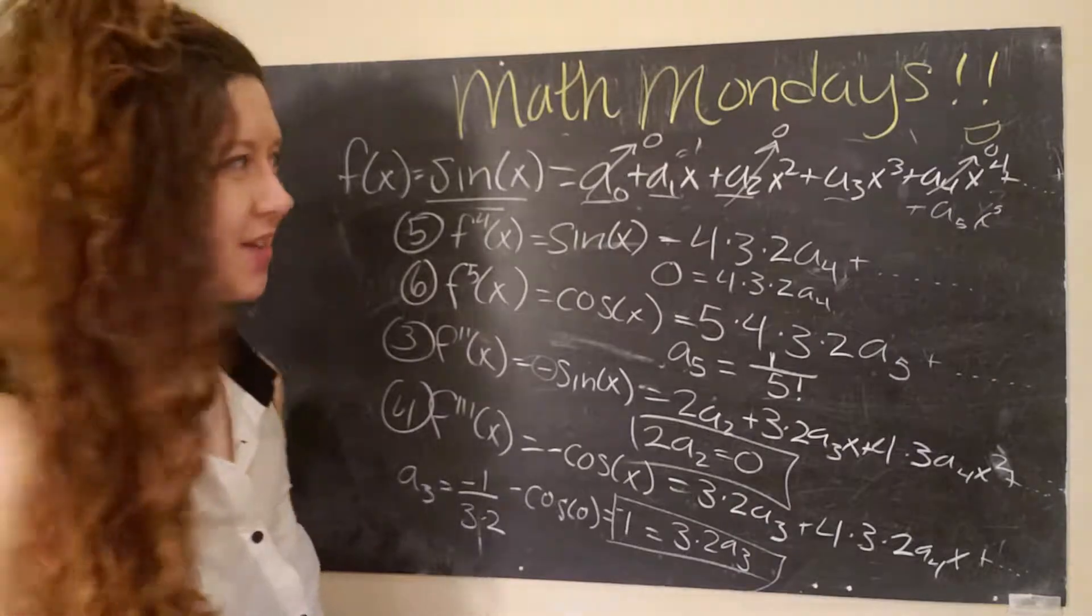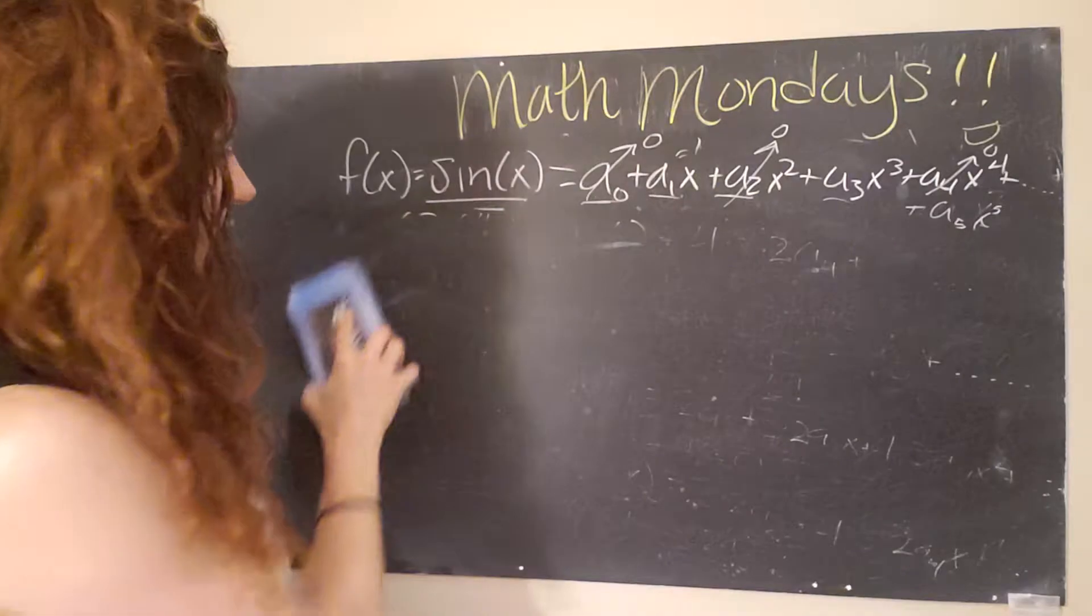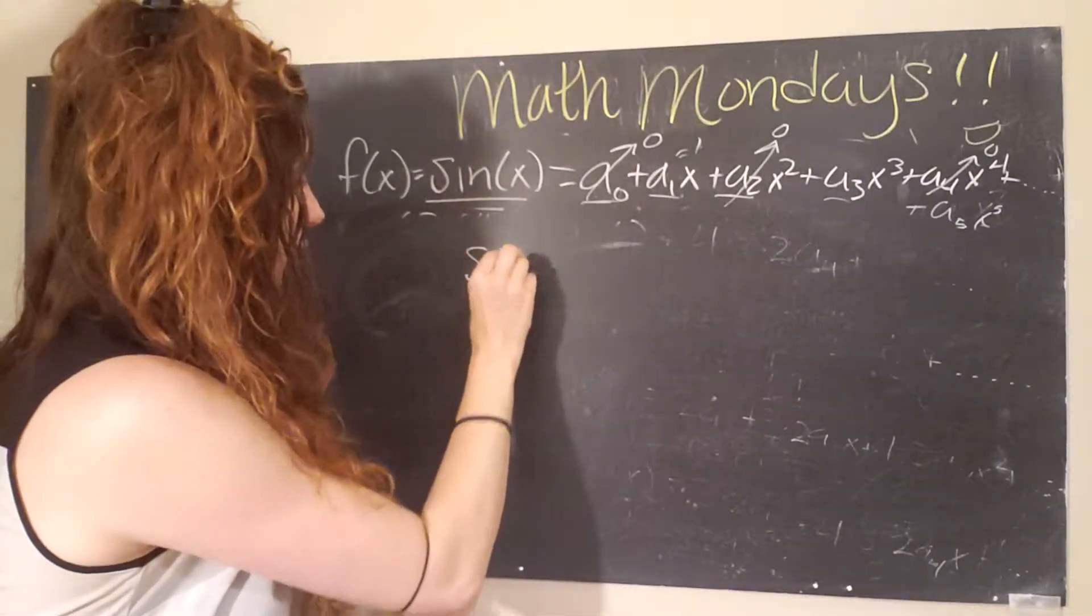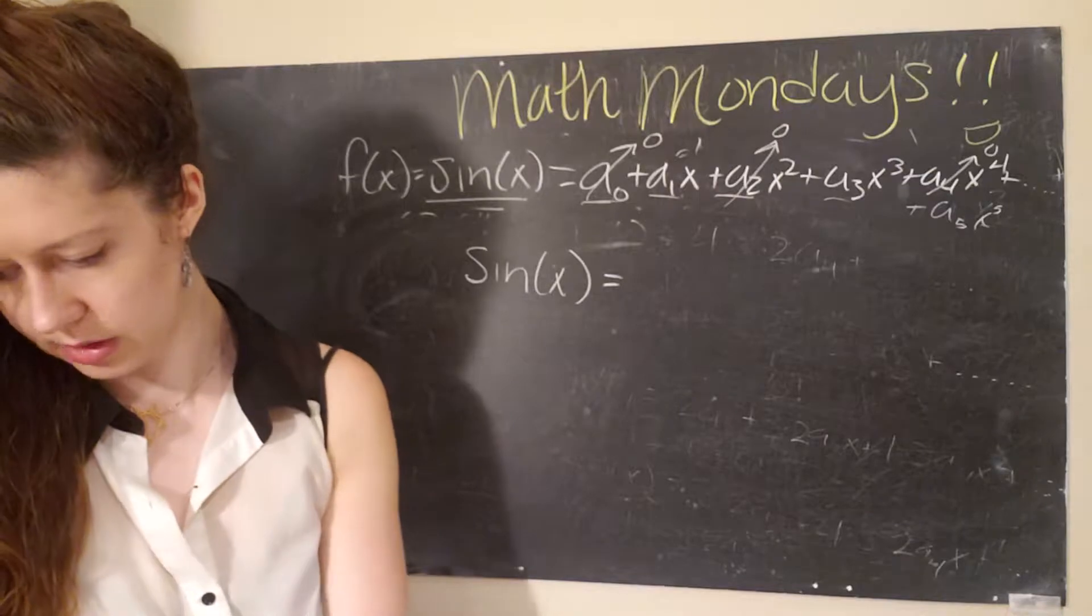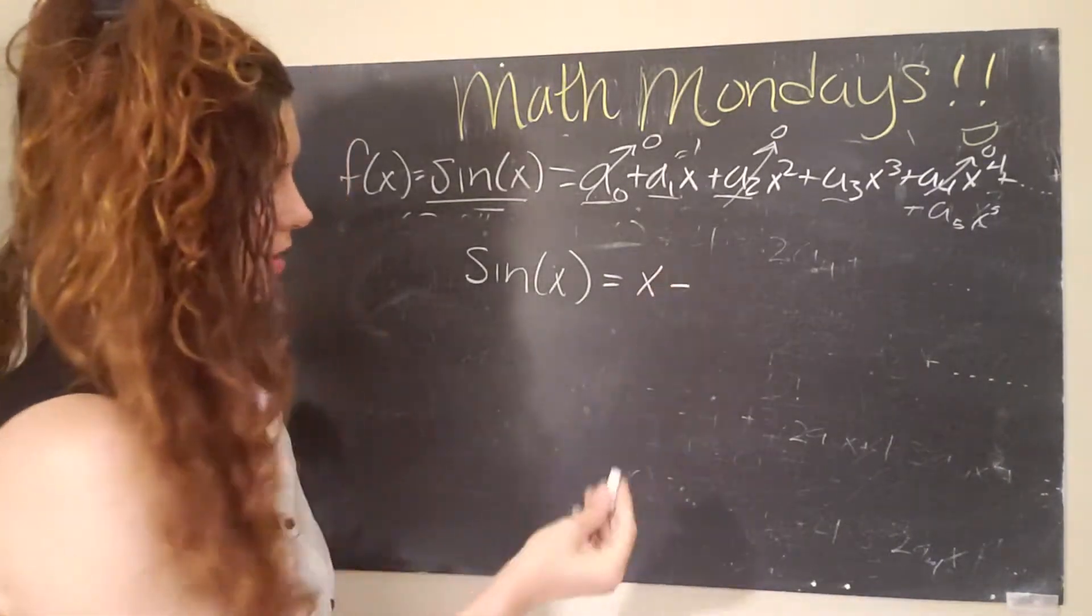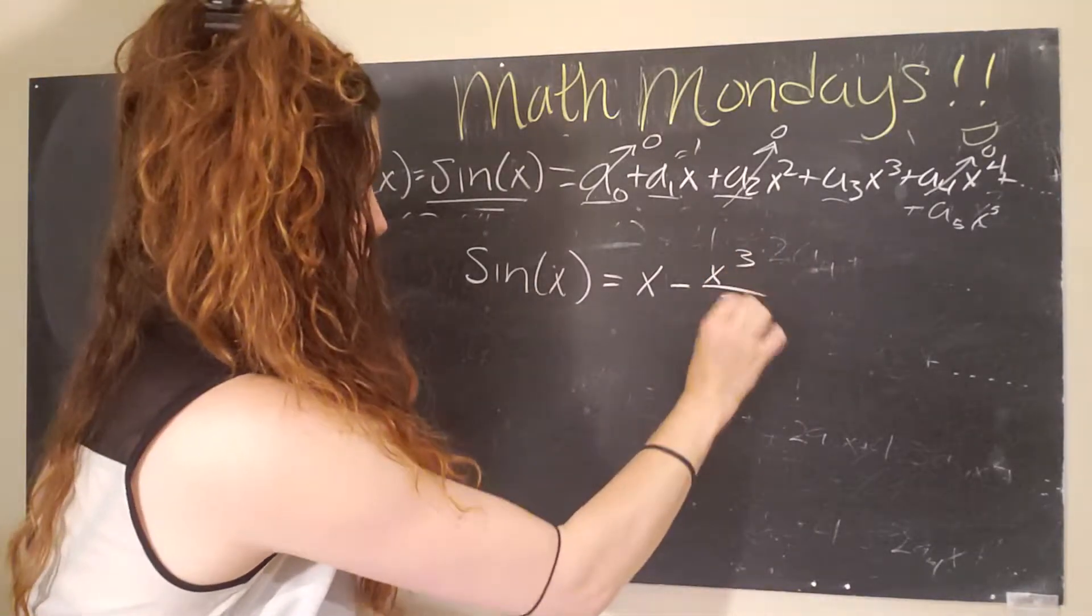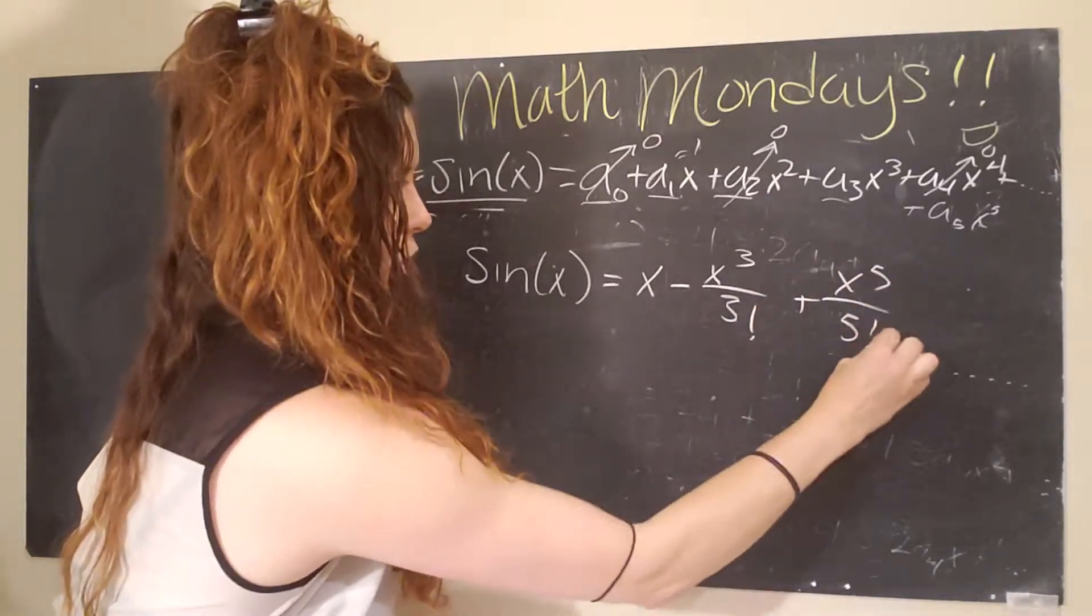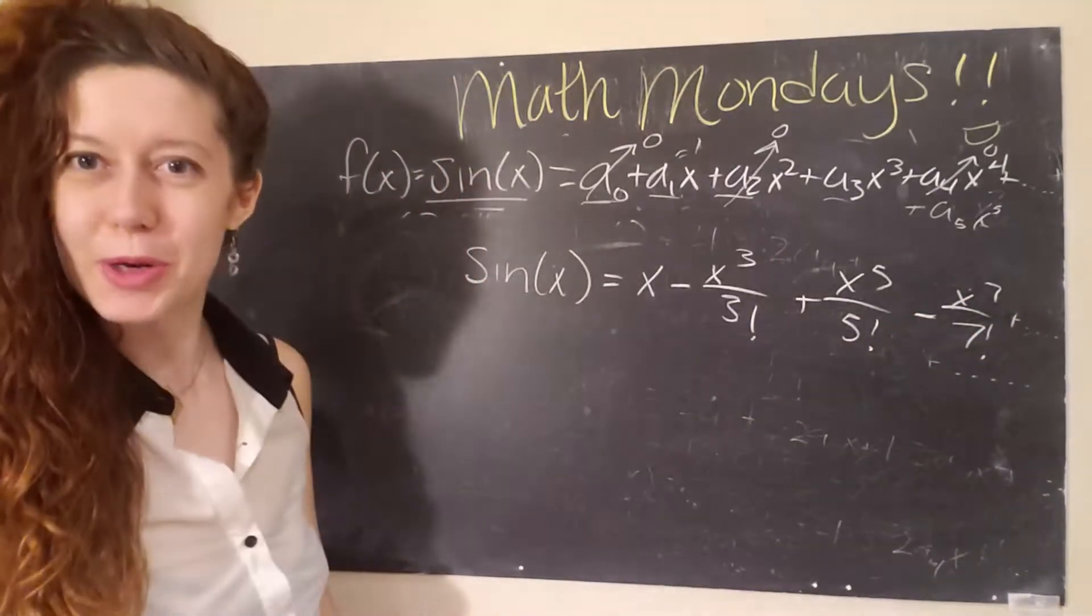We have a pattern. Look at that. And you could keep doing this many, many more times. And you are going to find that this pattern holds. And so what you get is that the Taylor series expansion of sine of x looks like, let me grab my notes because I definitely don't have this memorized. It looks like x minus x cubed over three factorial plus x to the fifth over five factorial minus x to the seventh over seven factorial plus, et cetera. Pretty cool, right?